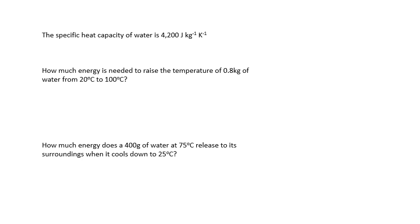Here's a couple of examples. The specific heat capacity of water is 4,200 joules per kilogram per kelvin. How much energy is needed to raise the temperature of 0.8 kilograms of water from 20 to 100? How much energy does 400 grams of water at 75 degrees centigrade release to its surroundings when it cools down to 25? Q equals MC delta T. So M 0.8 times 4,200 times 80, because that's the difference in temperature, is 269 kilojoules. The last one is 0.4 because it's 400 grams, and the temperature difference is 50, 84 kilojoules.